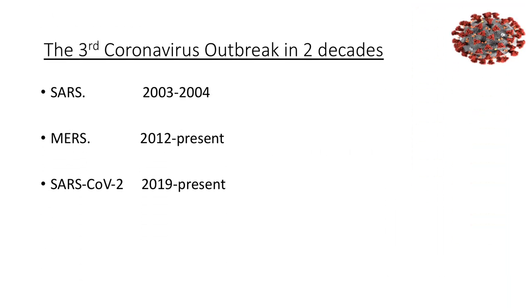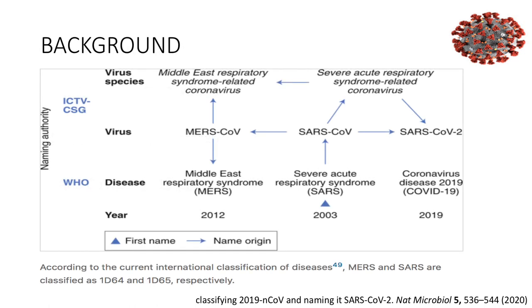This is the third coronavirus outbreak in two decades. SARS-1 started in 2003 and ended by 2004. MERS began in 2012 and continues to the present. SARS-CoV-2 began in 2019 and continues to the present. These three species under the coronavirus family are the only ones that can cause severe respiratory disease outbreaks. The persistent viruses up to now are MERS-CoV and SARS-CoV-2.